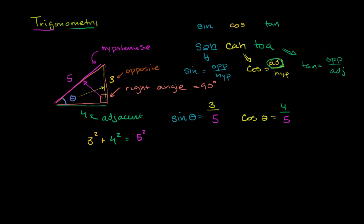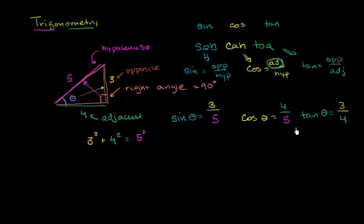Now let's do the tangent of theta. Tangent is opposite over adjacent. The opposite side is 3 and the adjacent side is 4. So knowing the sides of this right triangle, we were able to figure out all the major trig ratios. There are other trig ratios, but they can all be derived from these three basic trig functions.